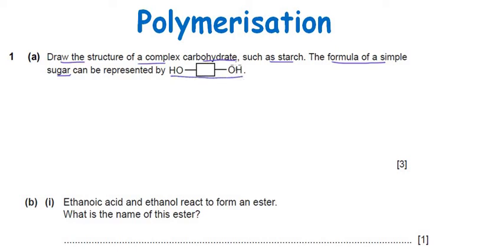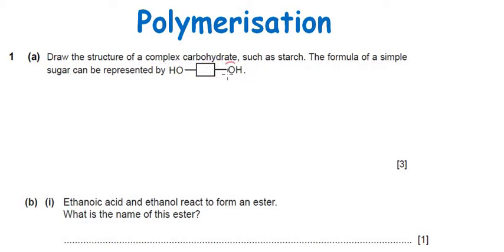The monomer has two OH groups. In polymerization we remove water when making condensation polymers. So to remove water, we remove the OH from one side of the monomer and H from the other side of the monomer.